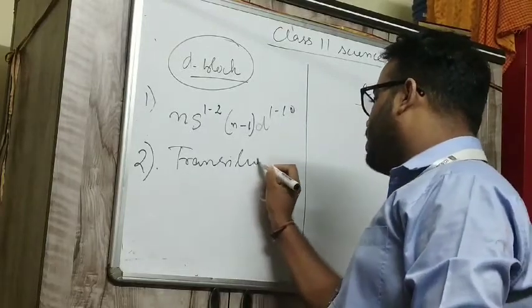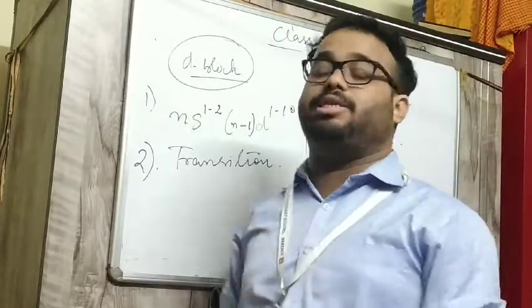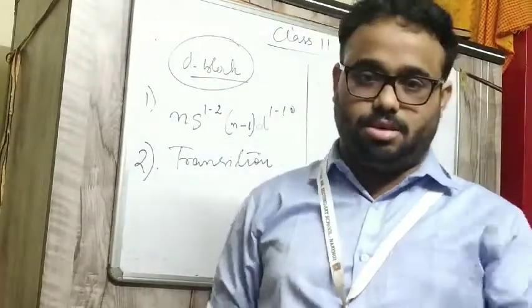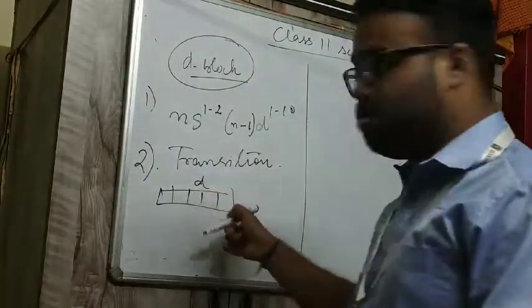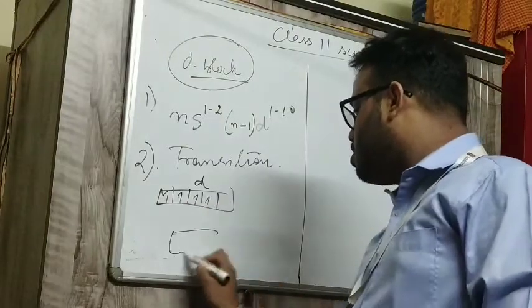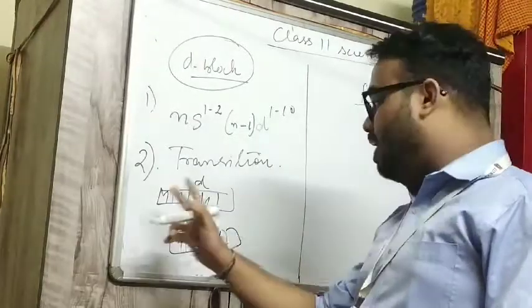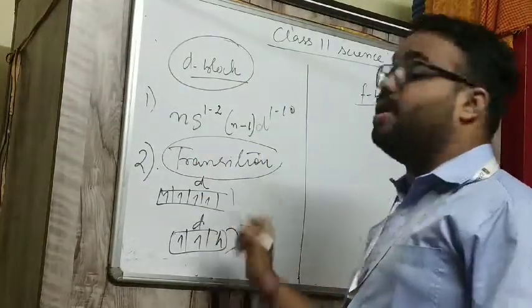Number two: d block elements are also called transition elements because they have unpaired d orbitals. D block elements are like this, if they have maximum this type of orbitals means unpaired, not paired, alone, all are alone. So that's why they are called transition, means they are not paired.